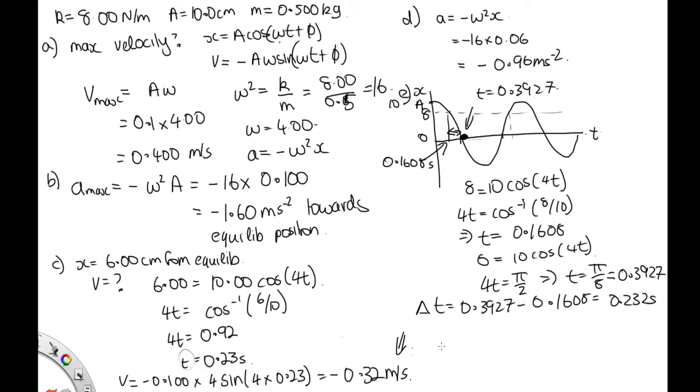Another way to do it is to use the expression that we've just derived, that the velocity is equal to ω times plus or minus √(A squared minus x squared). So we've got plus or minus ω, which was 4. The amplitude was 0.100 squared. We were told that x, it was 6 centimeters from the equilibrium, so that's 0.06 squared.